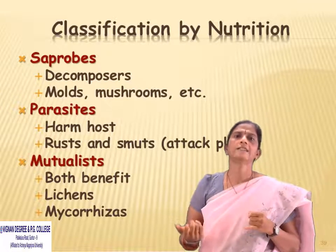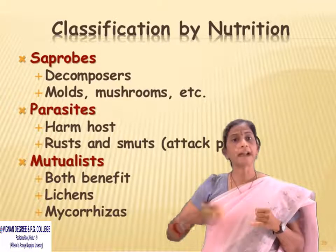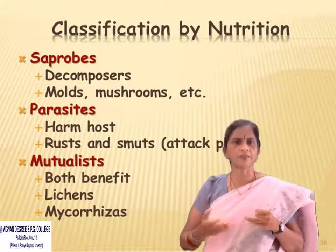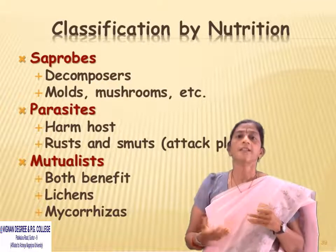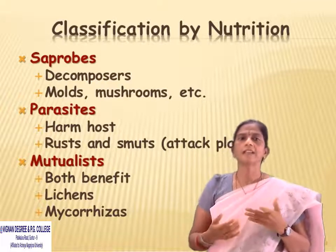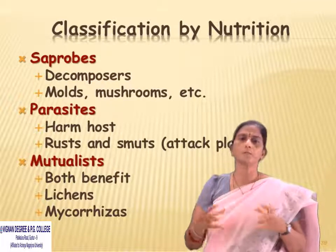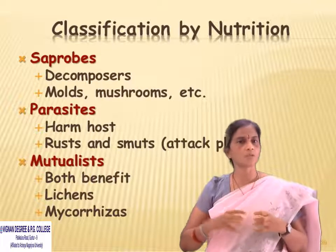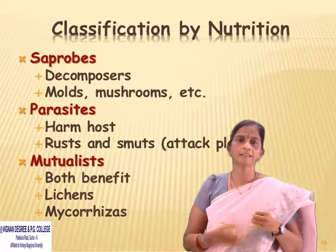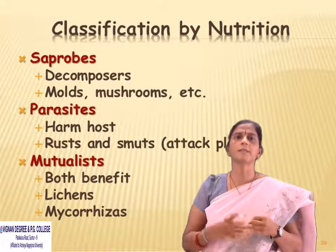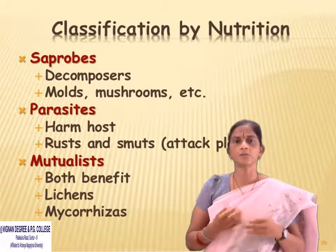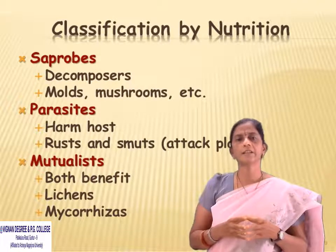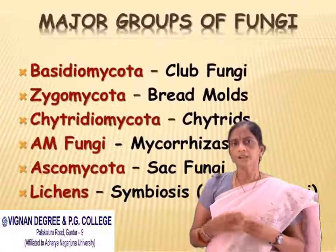Parasites may attack plants; examples are rust fungi and smut fungi. Some may act as mutualists — mutualism is a mutual association between the host and the fungi, such as lichens and mycorrhiza, where both organisms benefit.